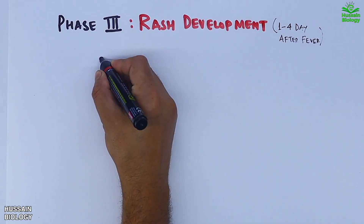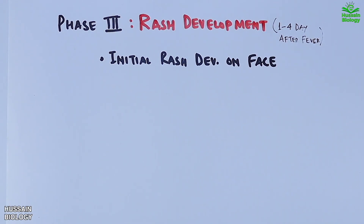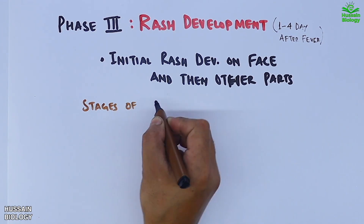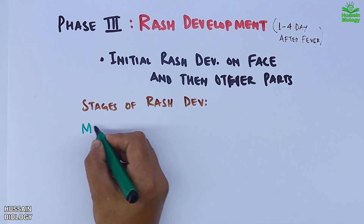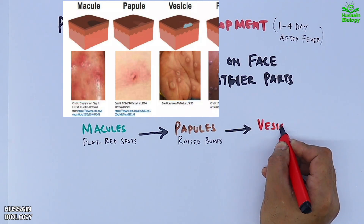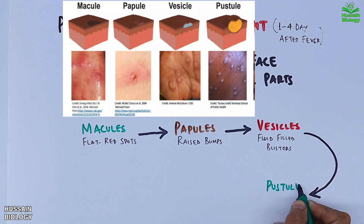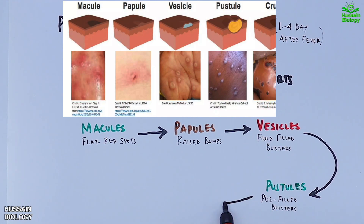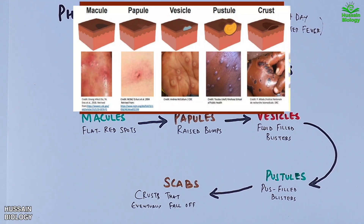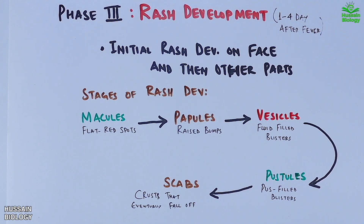The third phase is rash development, lasting one to four days after fever onset. The rash initially appears on the face and then spreads to other parts of the body. It develops in stages: macules (flat red spots), papules (rigid bumps), vesicles (fluid-filled bumps), pustules (pus-filled blisters), and finally scabs (crusts that eventually fall off). Fatality can occur in both Clade 1 and Clade 2, but more fatalities occur in Clade 1b. If fatality doesn't occur, there is a recovery phase after rash development.